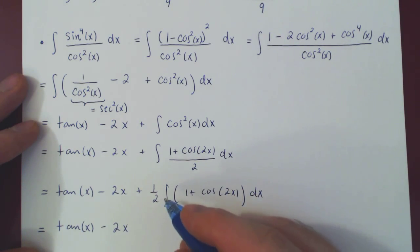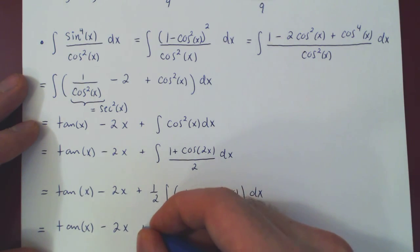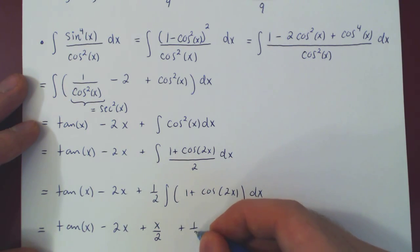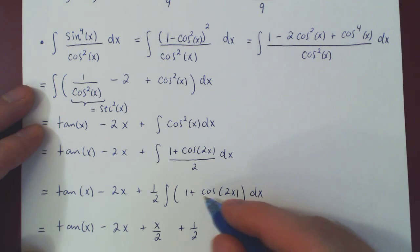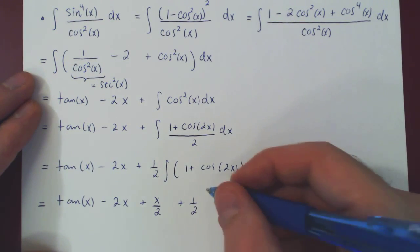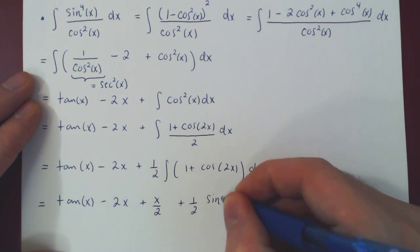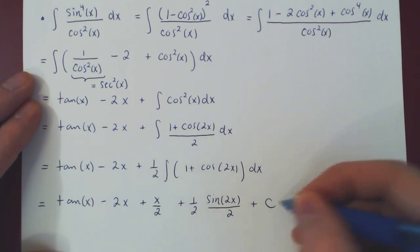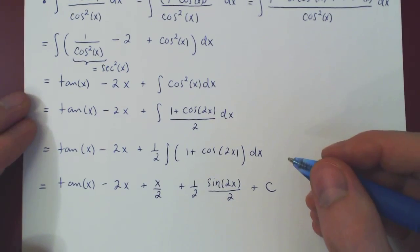And now we can easily integrate the left over two functions. The integral of 1 is x, times 1 half plus x over 2. Plus 1 half. And again by the chain rule, the integral of cos of 2x is sin of 2x over 2. Of course, plus c. And then we can simplify a little bit.